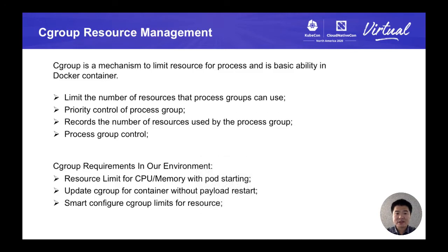As we know, cgroup is an implementation to limit resources for processes and is a basic ability in Docker containers. With cgroup, we can set the limitation on the number of resources that a process group can use, set the priority control of the process group, and record the number of resources used by the process group. In our production Kubernetes environment, database instances are deployed in pods, so we use the resource limitation configuration at the container level.